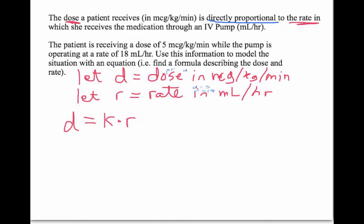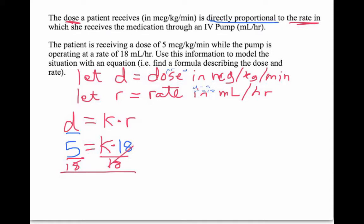The general form looks like this: the dose equals some constant times R. At one time, the dose was 5, so 5 equals K times 18. I don't know the constant of variation, but at that same time when the dose was 5, the rate was 18. To solve for K, I divide both sides by 18, and I get K equals 0.27 repeating.